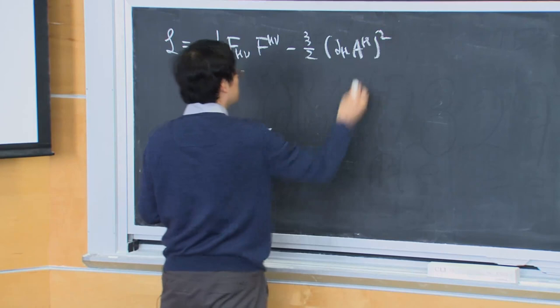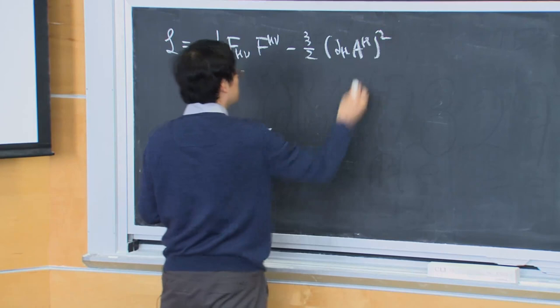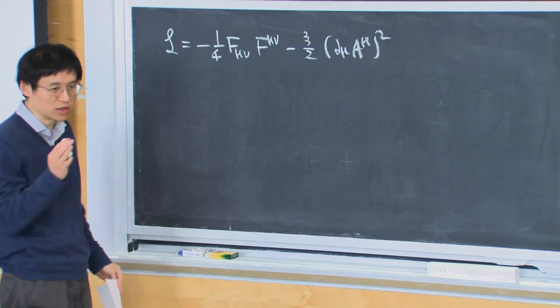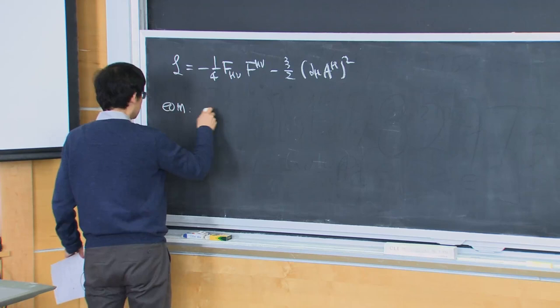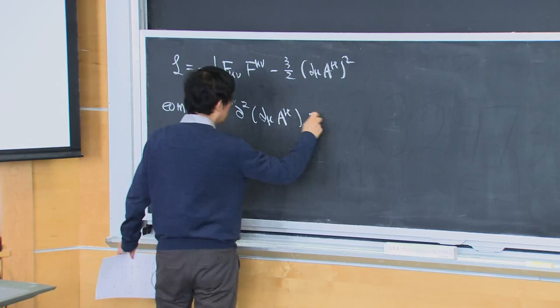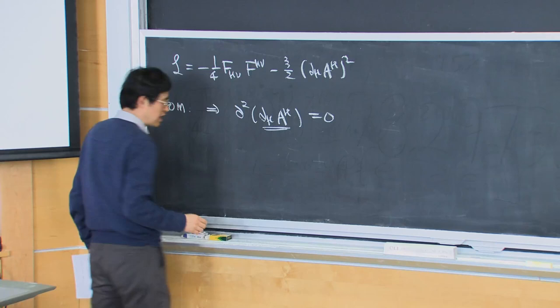We showed earlier that the Lorentz gauge can be ensured just by following the equation of motion. You just get from the action the equation of motion, which relates to partial-squared, and partial_mu A^mu equal to 0. So the equation of motion almost ensures partial_mu A^mu = 0; you just have to make sure your boundary conditions are such that partial_mu A^mu = 0.